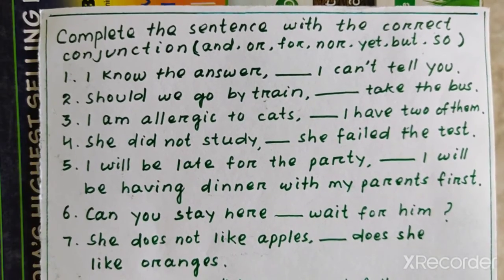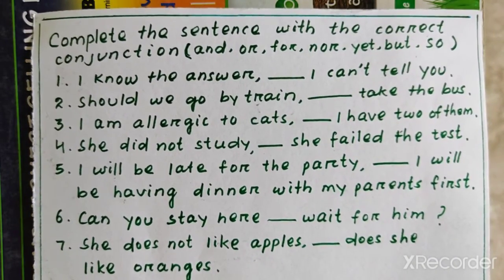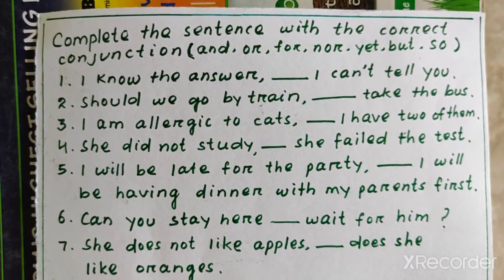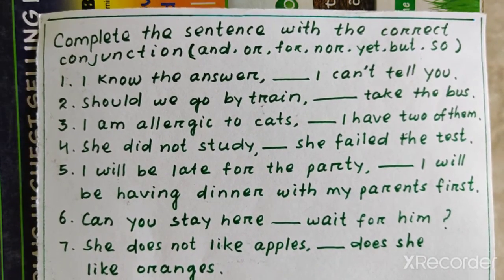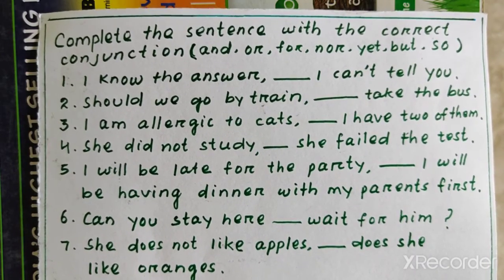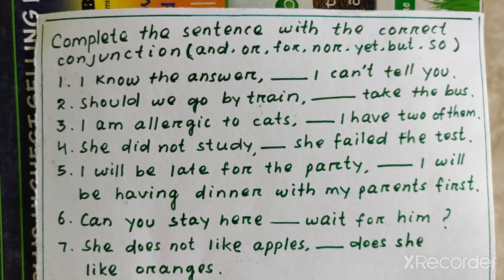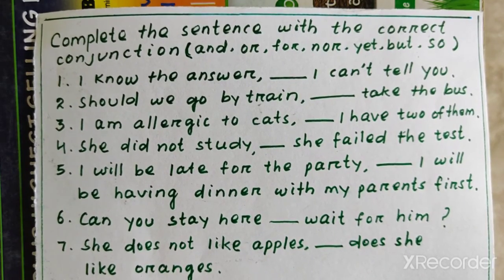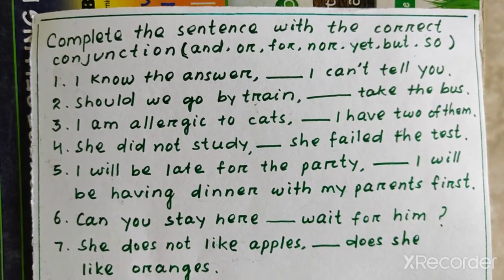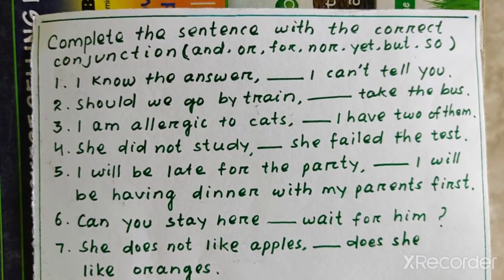I hope all of you have got ideas about conjunction and coordinating conjunction. Now I am giving you some homework: complete the sentence with the correct conjunction using and, or, for, nor, yet, but, so, etc.